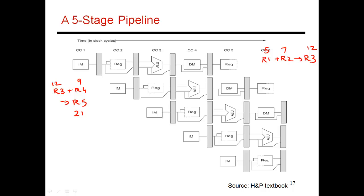Looking at the first instruction: I read R1 and R2 from the register file, saving 5 and 7. Then I do 5 plus 7, producing the result 12, which is saved in a latch. It moves from one latch to the next, and finally gets written into register R3.